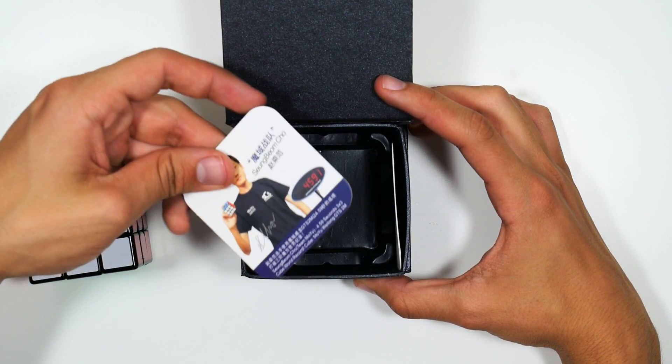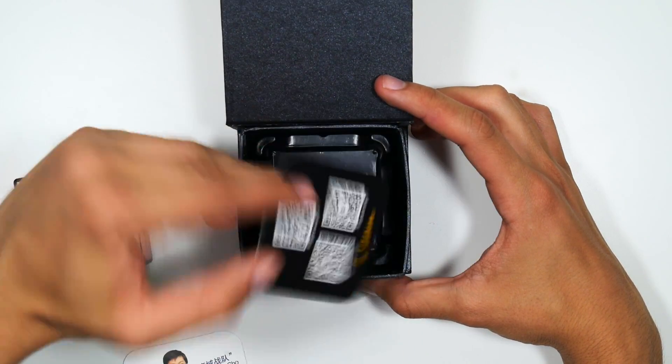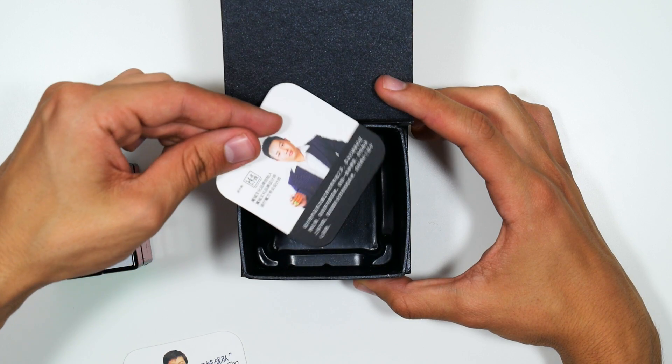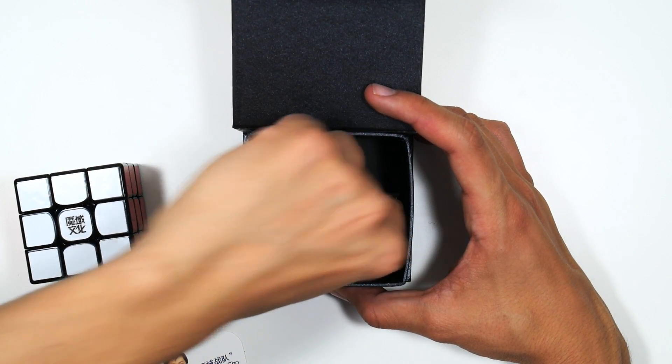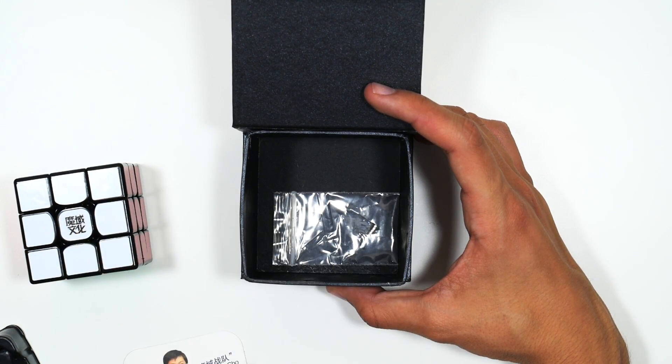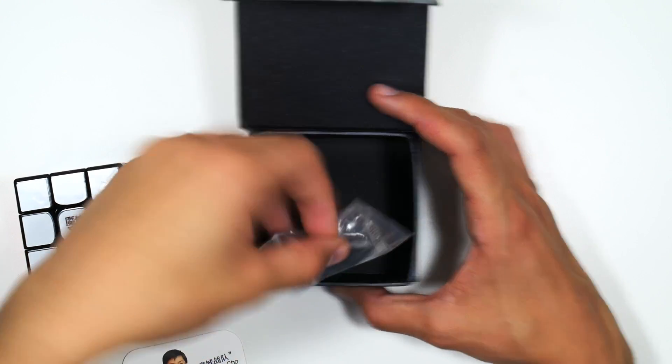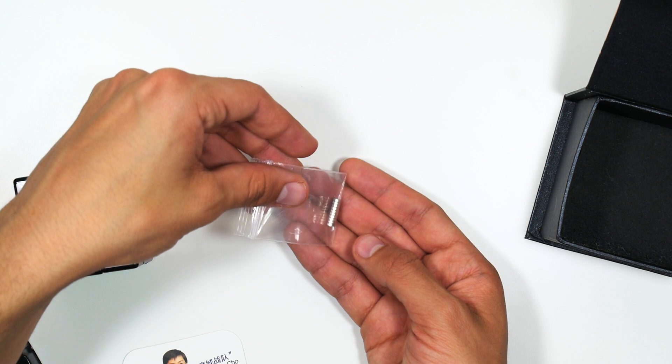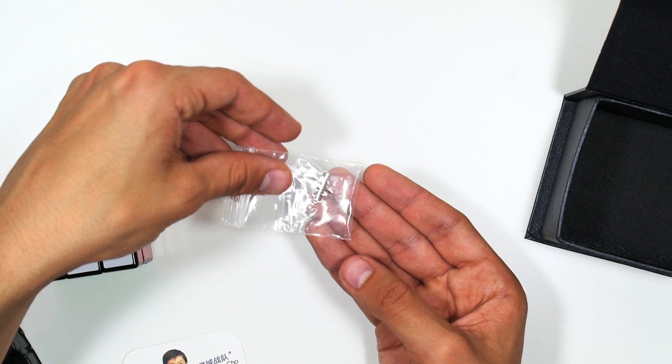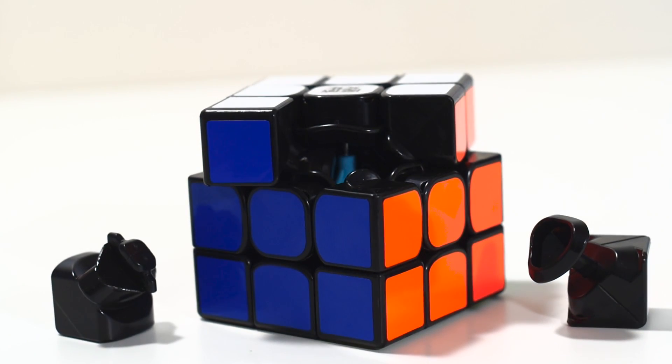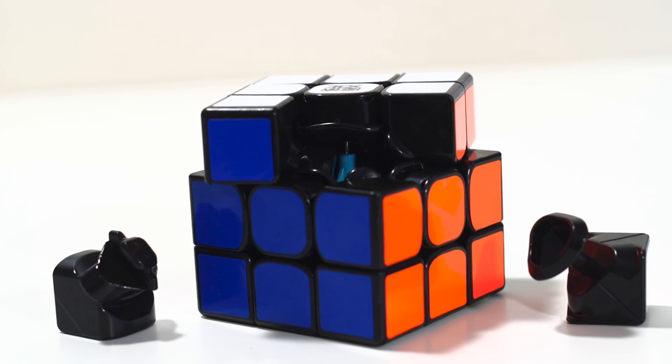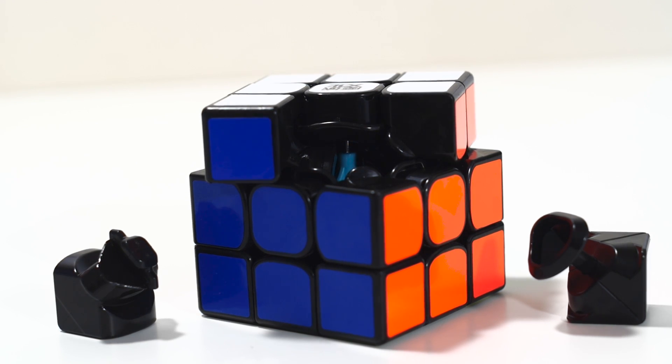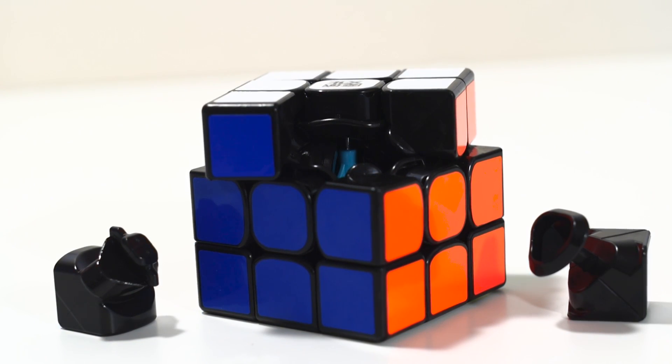Once you open that beautiful box, you've got the cube inside and two Team MoYu cards. Underneath the plastic, you have some spare magnets and your How to Solve manual. Honestly, this cube is crazy fast out of the box, and I think one of the things that causes this is its unique centerpiece design. It has a pretty defined ridge which most cubes don't have, and it also has that classic blue MoYu core.